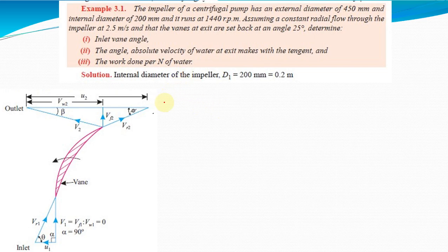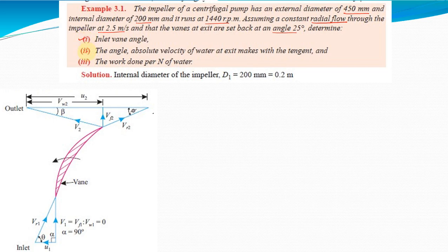Dear students, in this video I will explain the solution to this problem. First, read the problem. The impeller of a centrifugal pump has an external diameter of 450 mm and internal diameter of 200 mm, and it runs at 1440 rpm. Assuming a constant radial flow through the impeller at 2.5 meters per second, and the vanes at exit are set back at an angle of 25 degrees. Determine the inlet vane angle, the angle the absolute velocity of water at exit makes with the tangent, and the work done per Newton of water. So these three things we have to find.